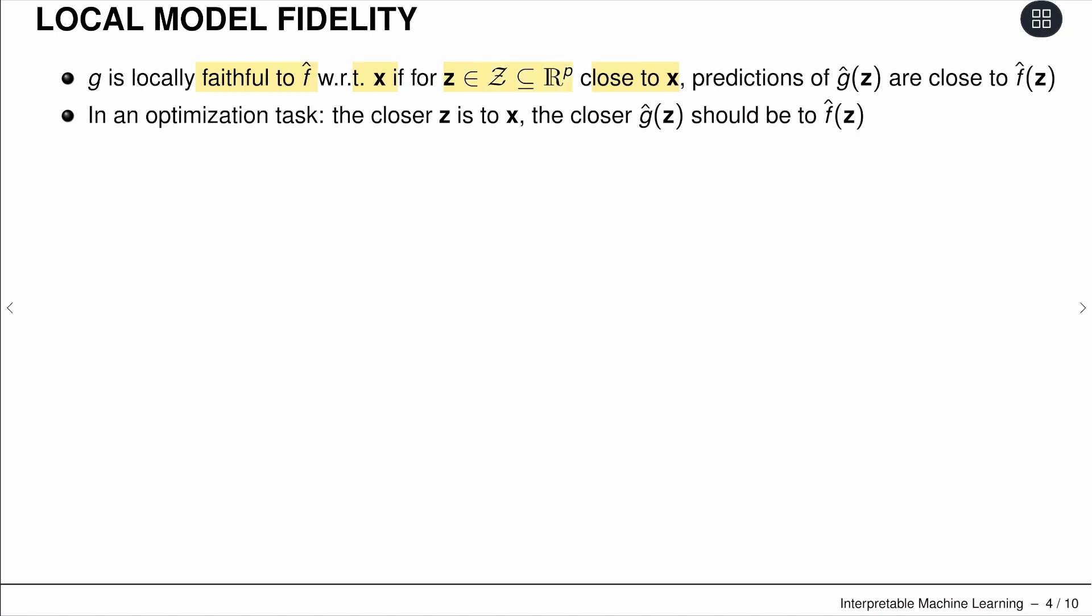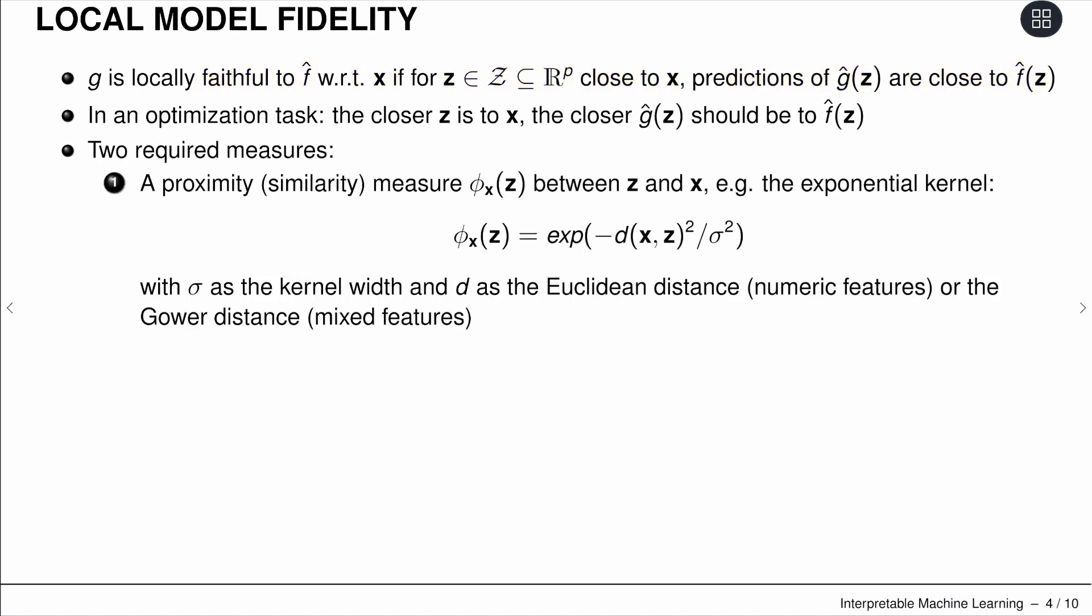Predictions of G hat of z should be close to the original predictions. We'd like to mimic the original model, but only for all the points which are really close to the original point. The optimization says the closer z is to x, the closer our model predictions should be to each other.